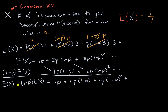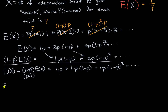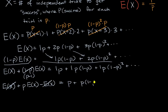Simplifying — if I distribute the negative and factor the expected value of x — on the left-hand side I have the expected value of x plus p times the expected value of x minus the expected value of x. Those cancel out, leaving p times the expected value of x. That equals p plus p·(one minus p) plus p·(one minus p) squared, and so on. If I want to solve for the expected value of x, I just divide both sides by p.